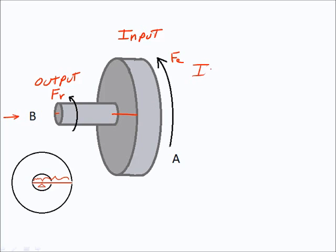The ideal mechanical advantage is equal to the input side divided by the output side. For a first class lever, it would be the length of the arms. But for a wheel and axle, it is the radius of each of the wheels. The input side would be the radius of the large wheel, and the output side would be the radius of the axle.